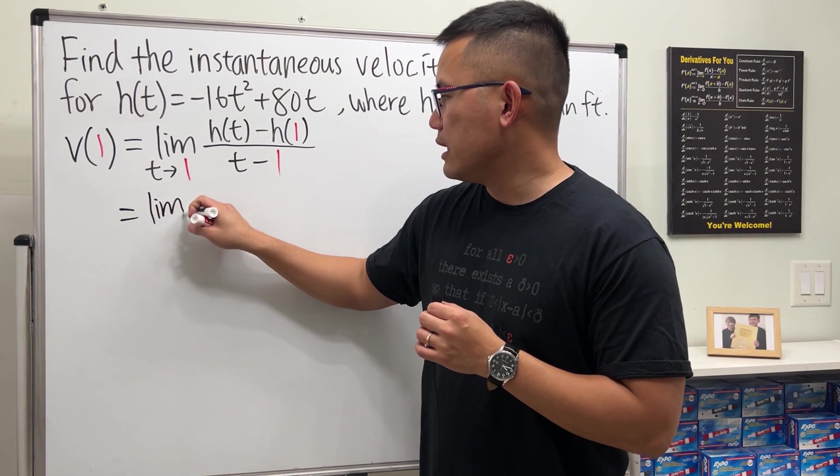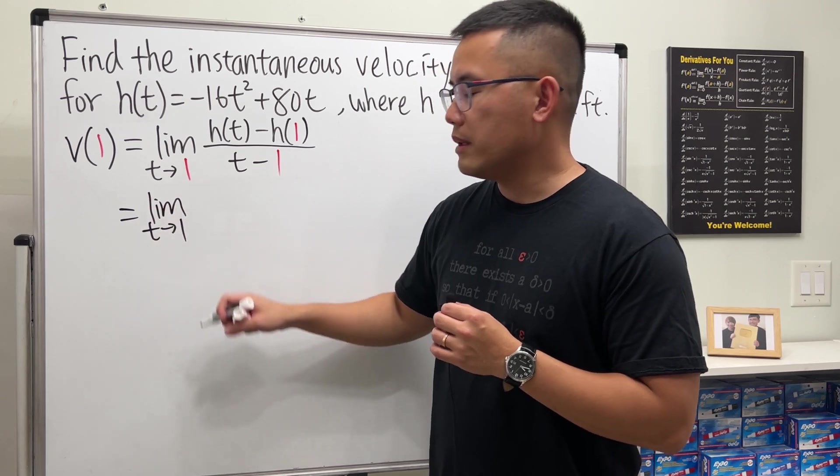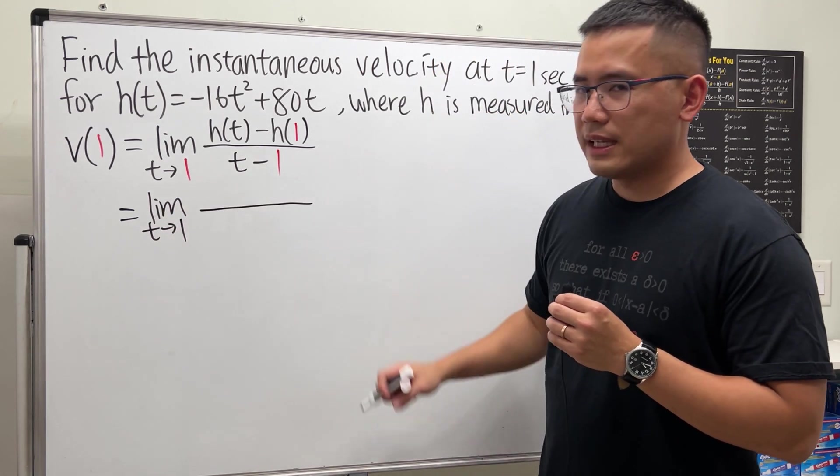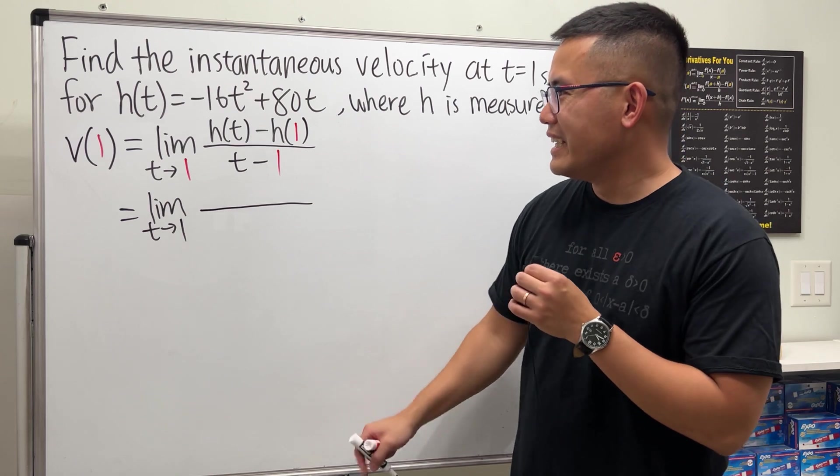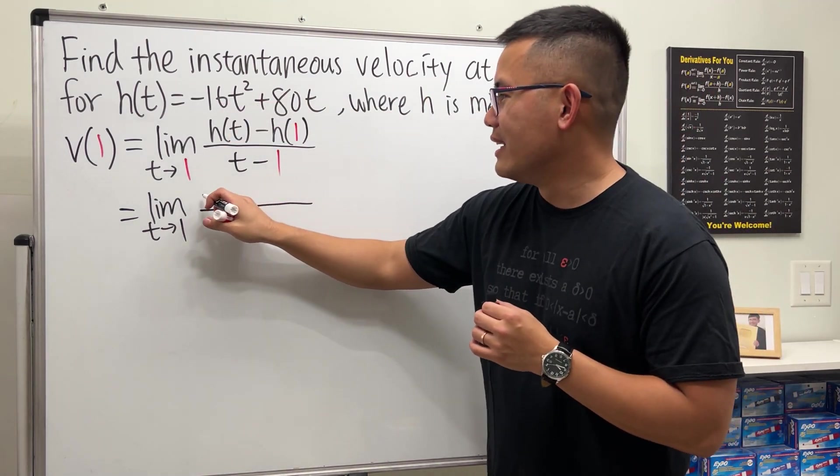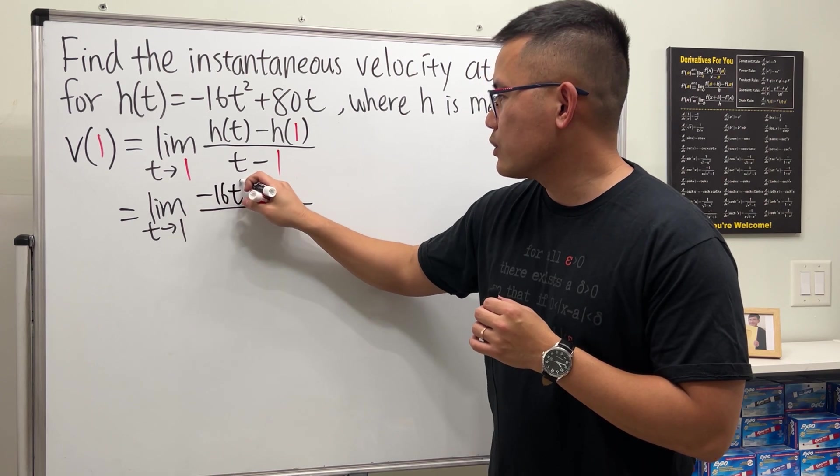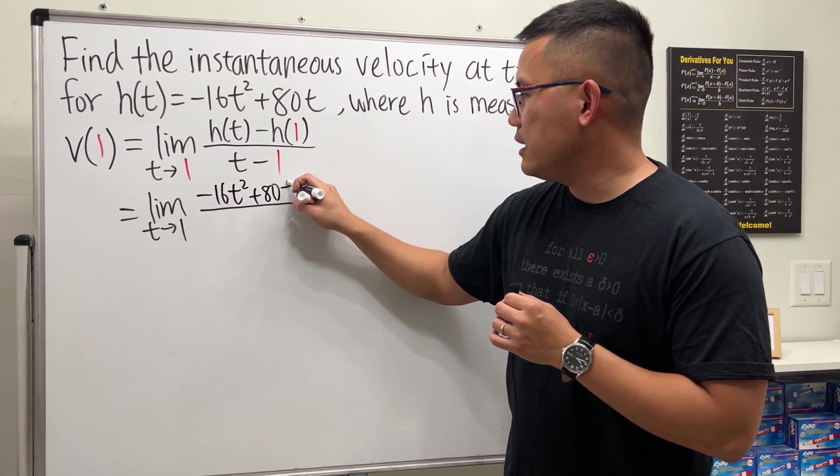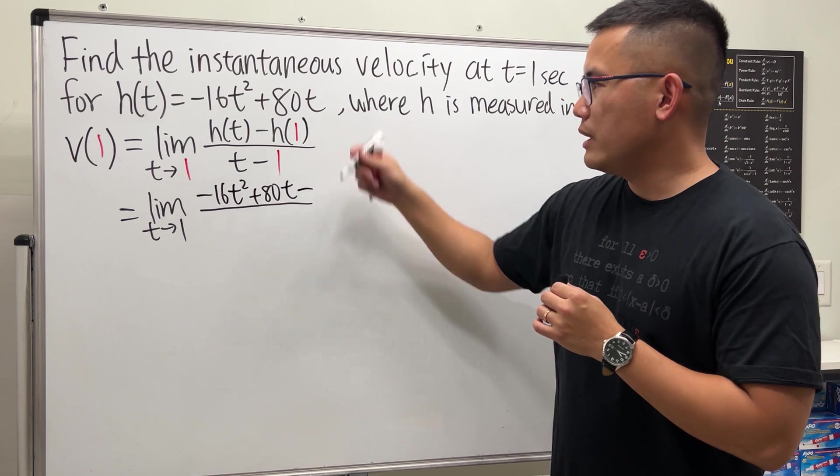So let's write it down. We have the limit as t goes to 1. And by the way, at the end, I will show you guys the fast way. But for now, let's stick with this. h of t is just this. So let's write it down. Negative 16t squared plus 80t. And then minus h of 1.